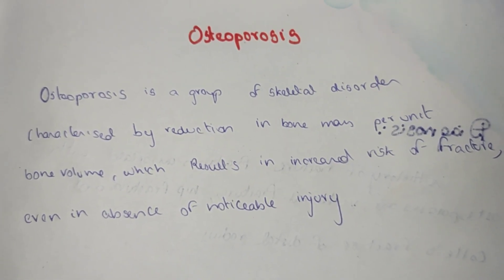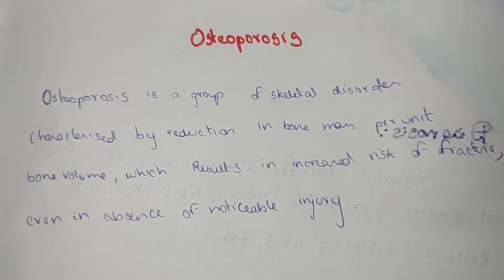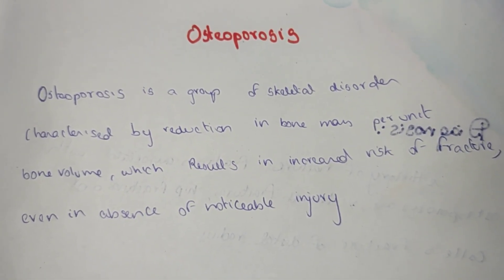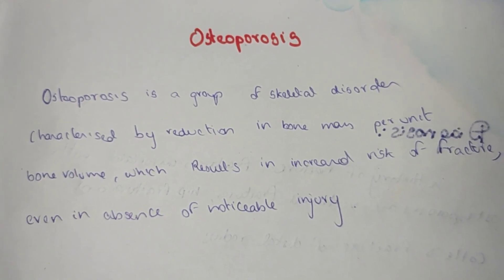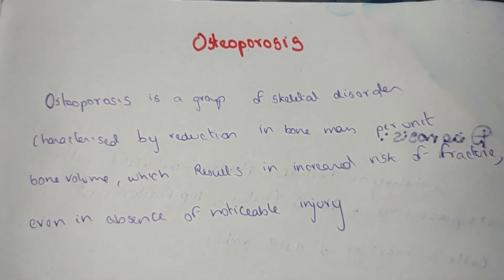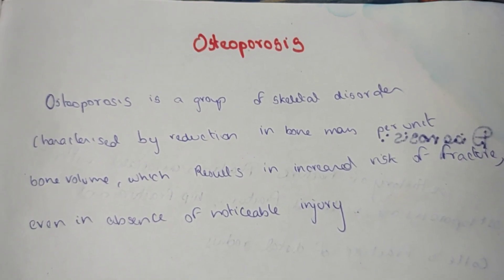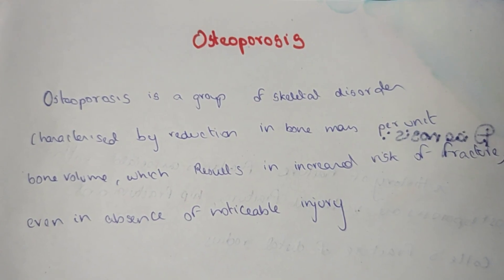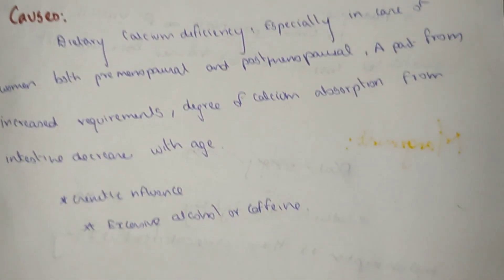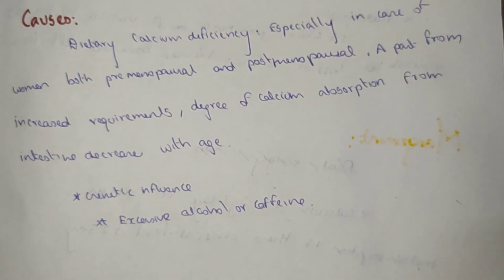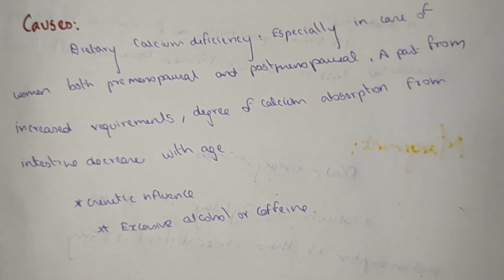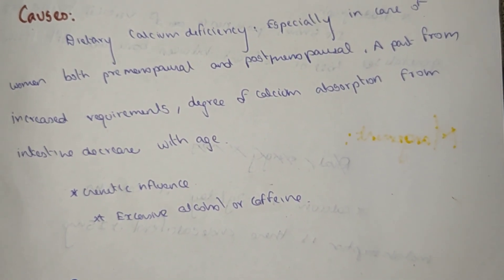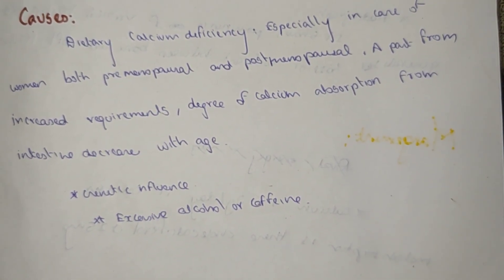Even in small injuries, these bones get fractured due to the loss of bone mass as well as bone volume. Now, the causes of osteoporosis are mainly three.